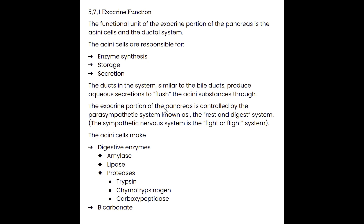Starting with the exocrine function — the functional unit of the exocrine portion of the pancreas is the acinar cells and the ductal system. Those acinar cells are responsible for making enzymes for digestion, storing those enzymes, and then secreting them when the time comes. The ducts also have an important role: when they receive the right hormones, they secrete water or an aqueous substance that helps flush the acinar enzymes through the ductal system.